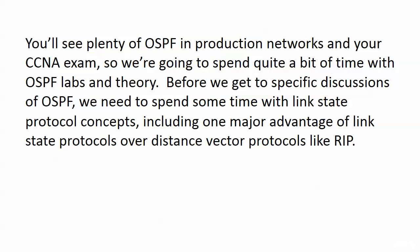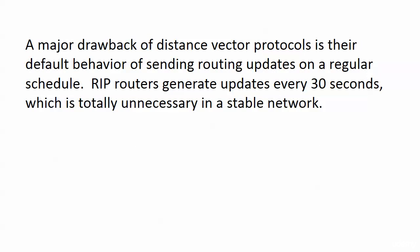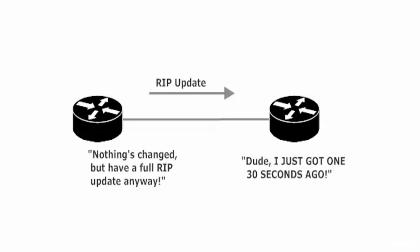We're going to talk about link state protocol concepts and compare them to distance vector protocols like RIP, because there's a reason we needed to develop protocols after RIP came along. One major drawback of distance vector protocols is that default behavior of sending a routing update on a regular schedule. That was a fine idea at the time, but it really doesn't serve us well now — especially when RIP-speaking routers generate updates every 30 seconds. If your network is changing every 30 seconds, you probably shouldn't be watching this — you should be at work.